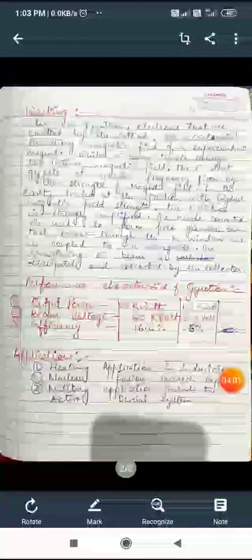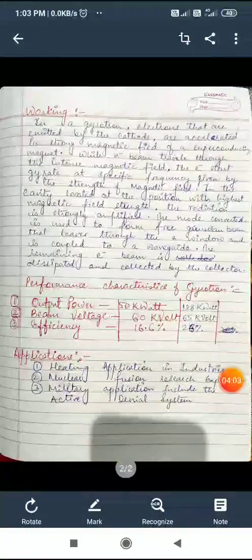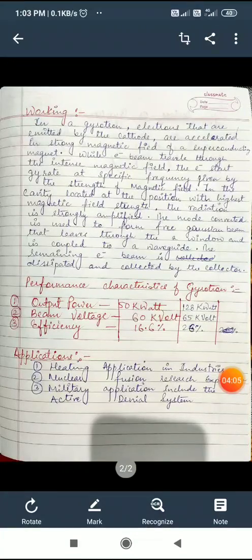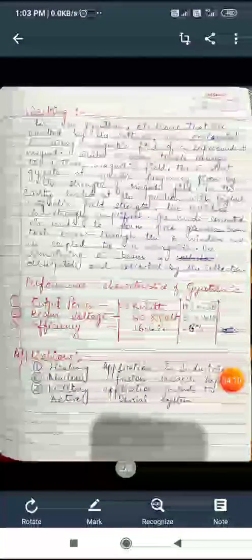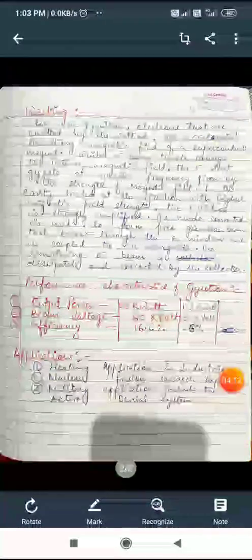The performance characteristics of gyrotron: output power it provides is 50 kilowatt output power at 60 kilovolt beam voltage with efficiency of 16.6 percent.